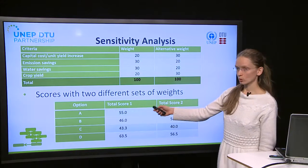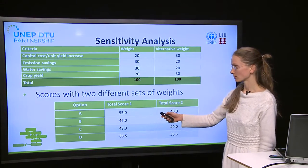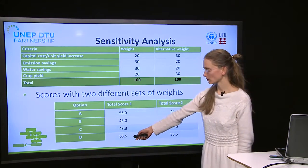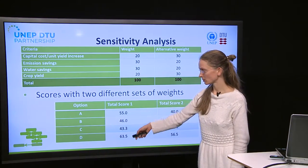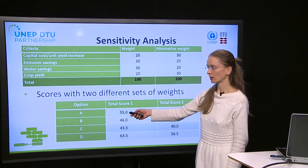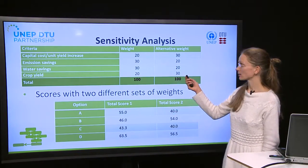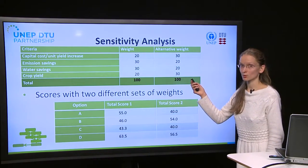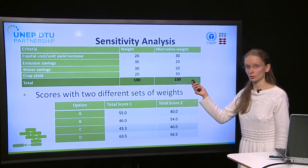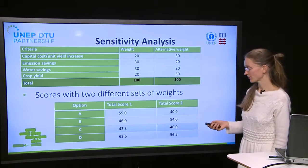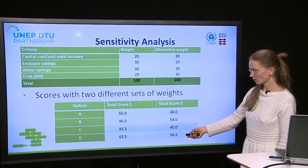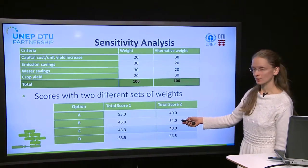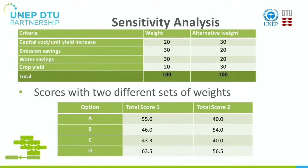The total score one is the one that we calculated before, where option D was the best one followed by option A. With this alternative weight that some stakeholders thought better, option D still wins but option B is now the second one.